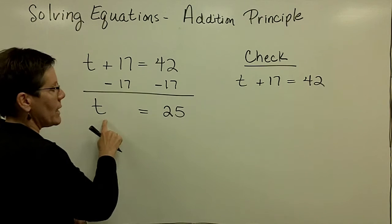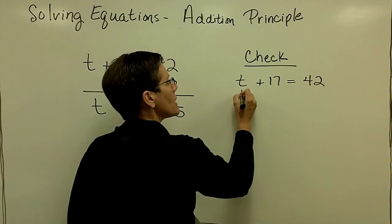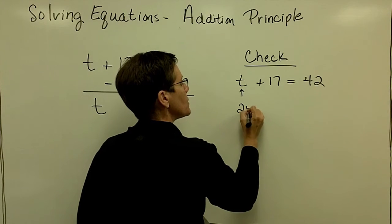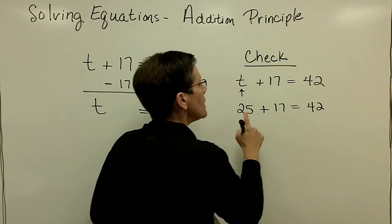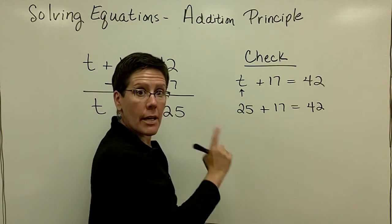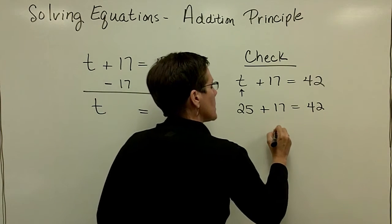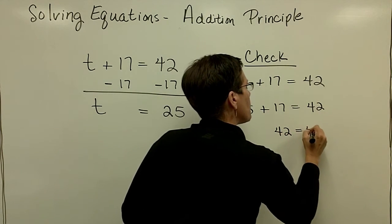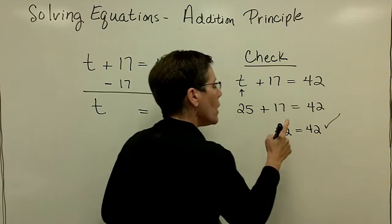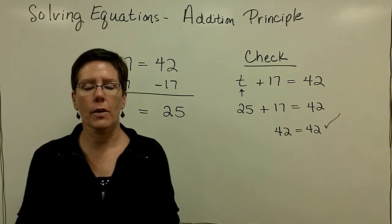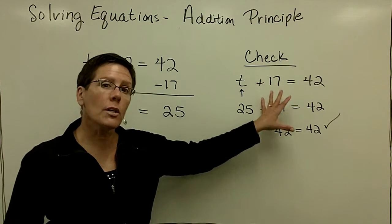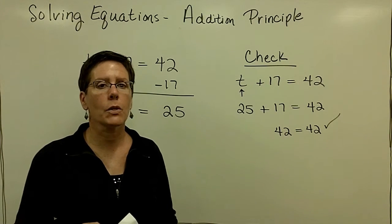The original equation is t plus 17 equals 42. That's the original problem. I found my answer to be 25. So for the letter t, I'm going to substitute in my answer, and I'm going to ask myself, does 25 plus 17, what does it give me? And it gives me a value of 42. And I could say, well yeah, the left side does equal the right side, so I must have found the correct solution. This is a real important part of the solving equation process.